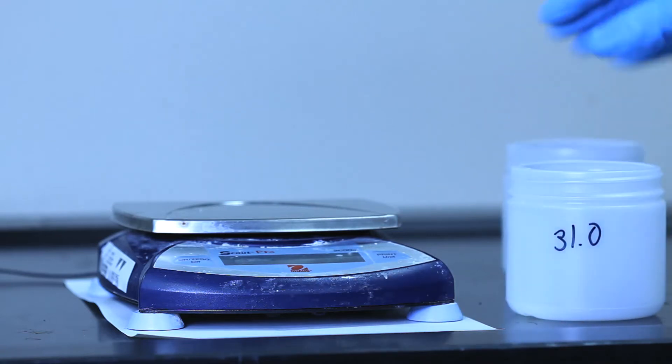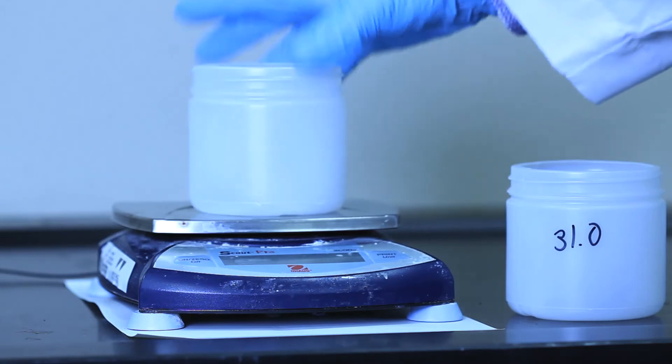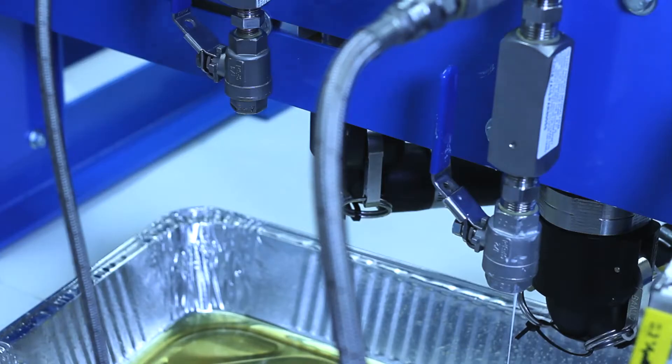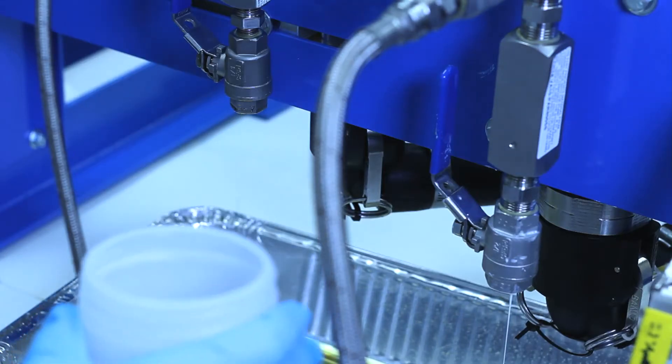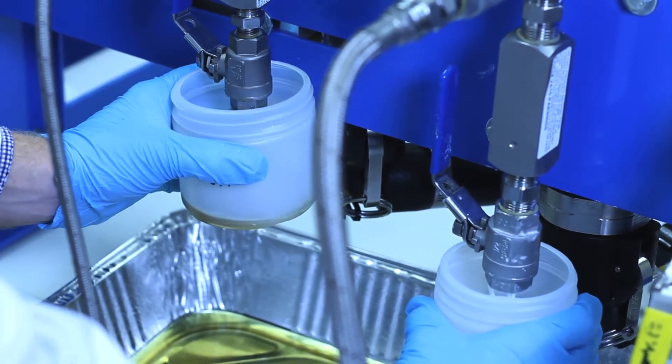Using a bench top scale, weigh two cups and record weight. Each cup should be able to hold at least 16 ounces. Place one cup under the resin and one cup under the hardener valve. The pump should be running when the cups are inserted and removed from material streams.